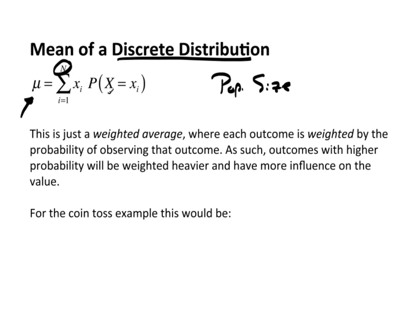Of the Xi times the probability of X equals Xi. So the Xi could be individual observations. And then this is the probability of actually observing that specific observation.